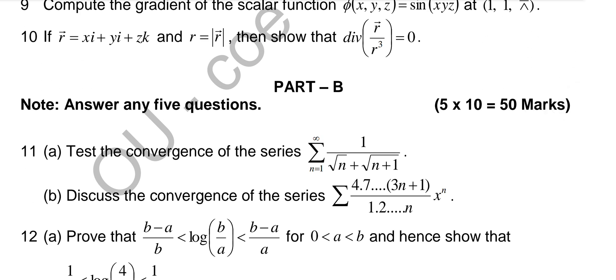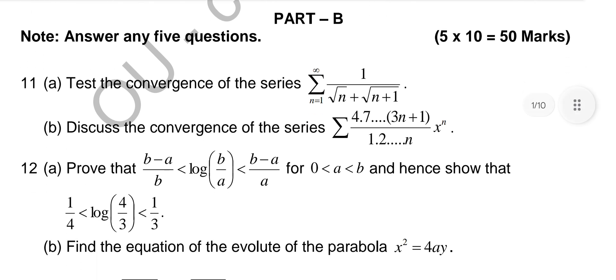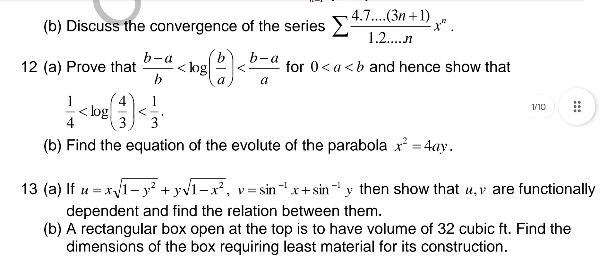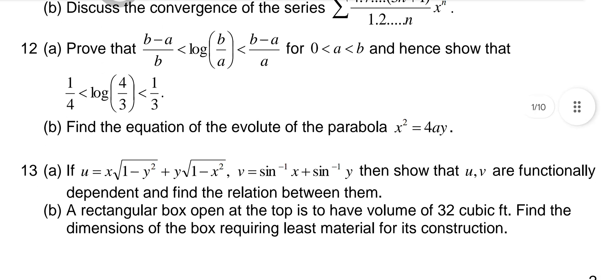Coming to the long answers: test the convergence of the series — here also we use the comparison test. So comparison test appeared in both the two-mark and the long-answer sections. Then discuss the convergence using D'Alembert's ratio test first; if it fails, go to Raabe's test. The twelfth question is a problem on Lagrange's Mean Value Theorem, and the next one asks to find the evolute of the parabola — evolutes and envelopes are topics covered there.